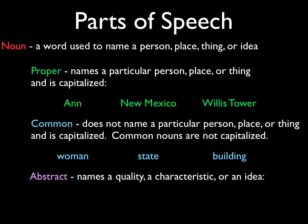Then there are such things as an abstract noun. An abstract noun names a quality, a characteristic, or an idea. One of those might be peace, or ambition — if you remember reading the Laura Ingalls stories, she had to write an essay on the word ambition; go check your Laura Ingalls books and find that little essay. Or the word loyalty. What makes these words abstract is that they cannot be sensed with any of your senses. You can't taste peace, you can't smell ambition, you can't hear loyalty. These are things that are understood, and that's why they are called abstract.